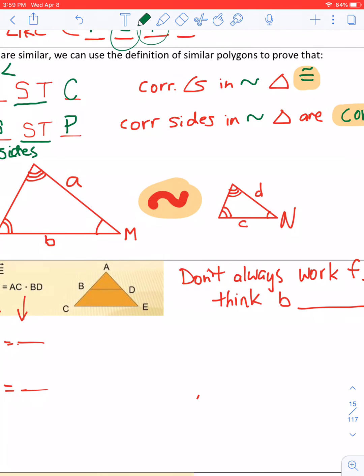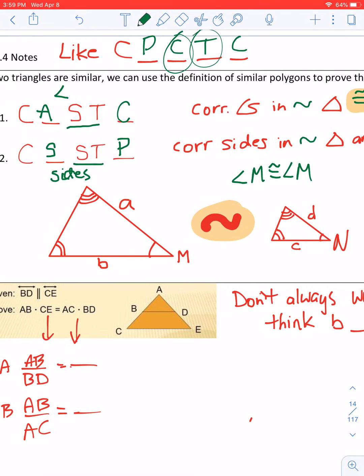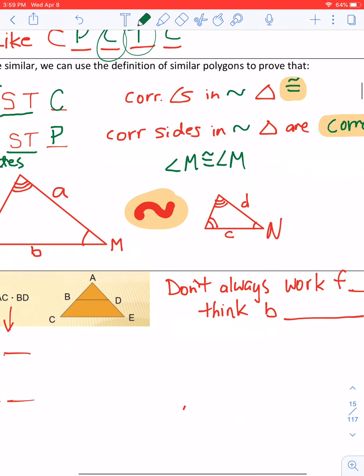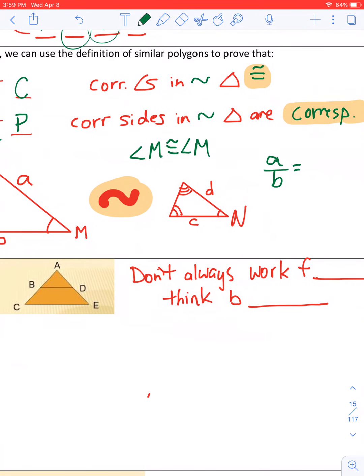So again, angle M and angle N are congruent because of CASTC, and AB—A is to B as D is to C. All right, so these are two conclusions we can make based upon the statement that they're similar.